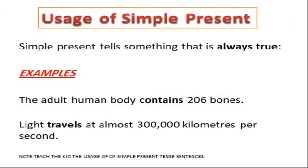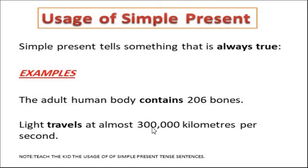What about the usage of Simple Present? Simple Present tells something that's always true. For example: the adult human body contains 206 bones. Light travels at almost 300,000 km per second.